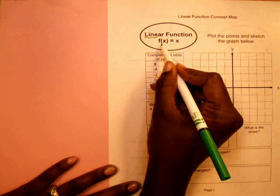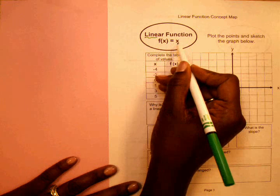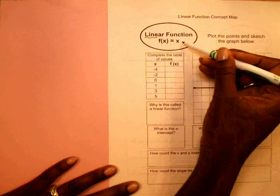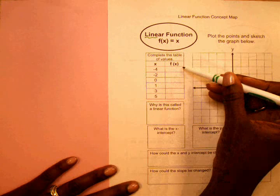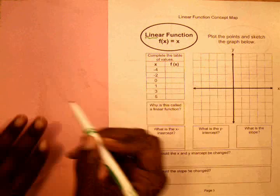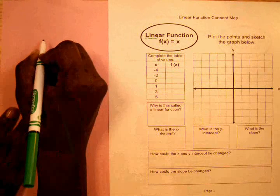The function f(x) equals x is the function rule. This is what I have to use to find my output values that go in my table. Here I have some scratch paper to figure out the rest of the output values.